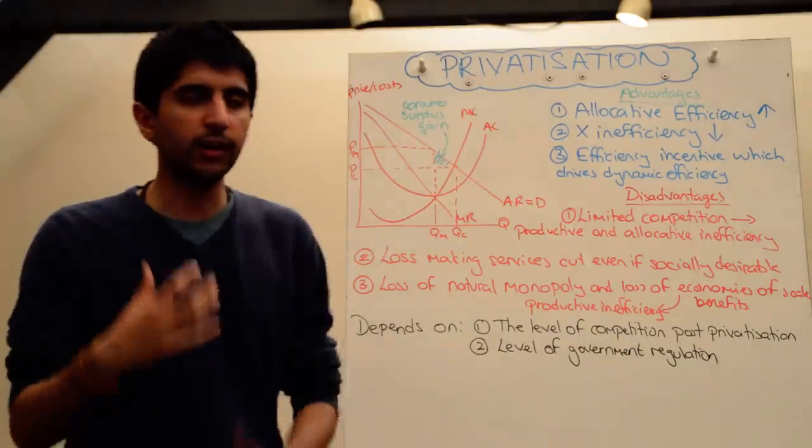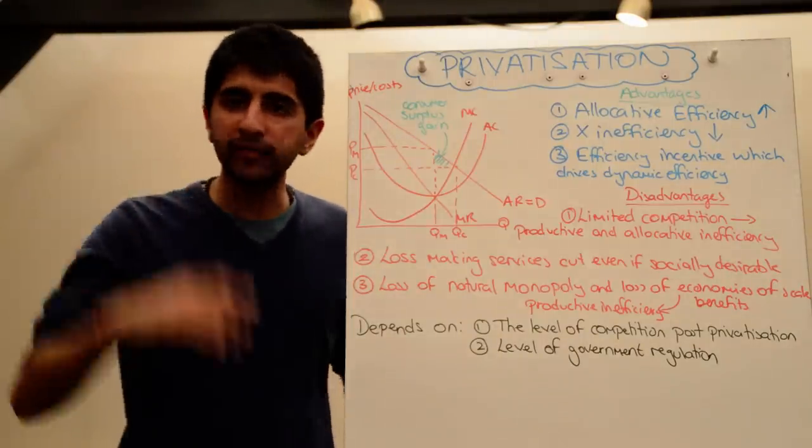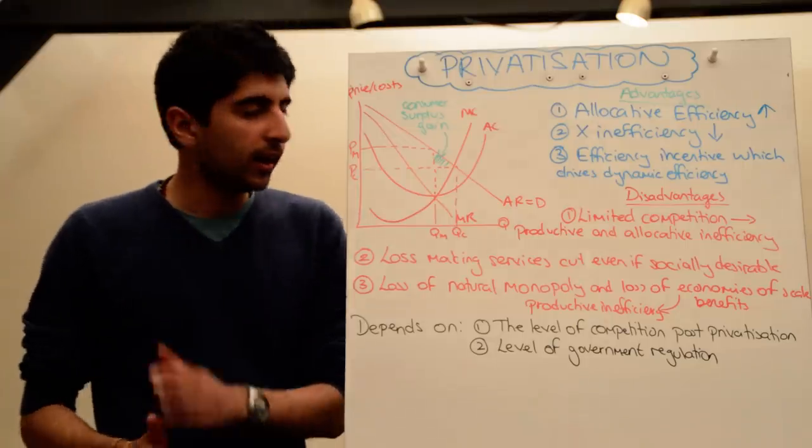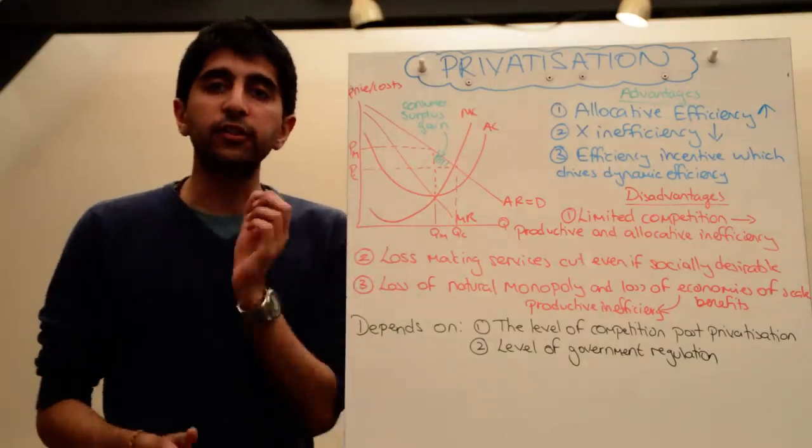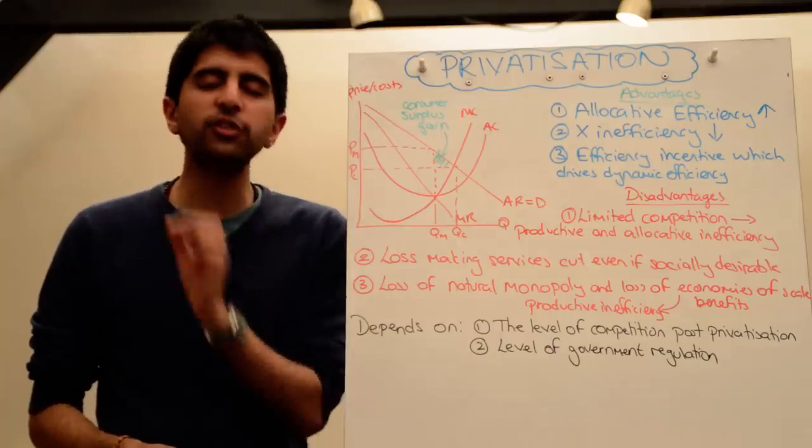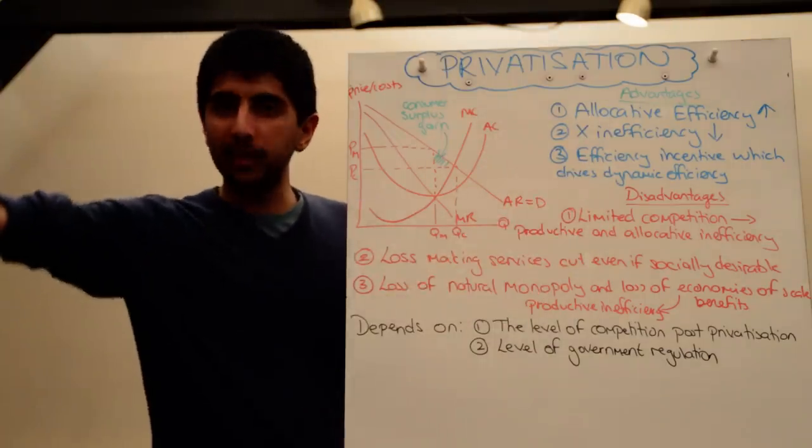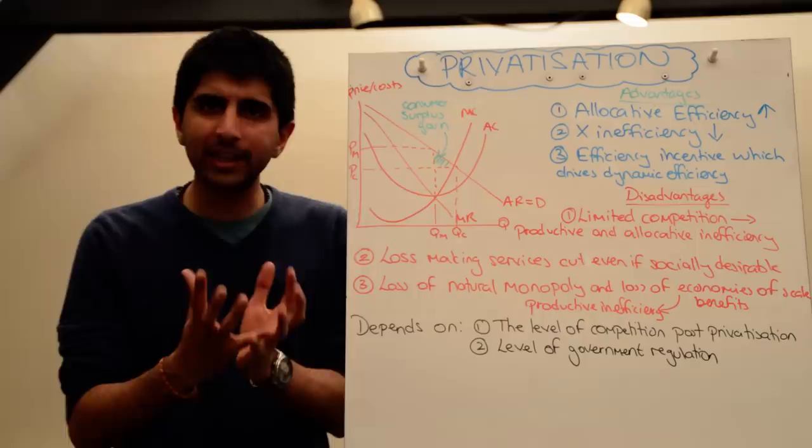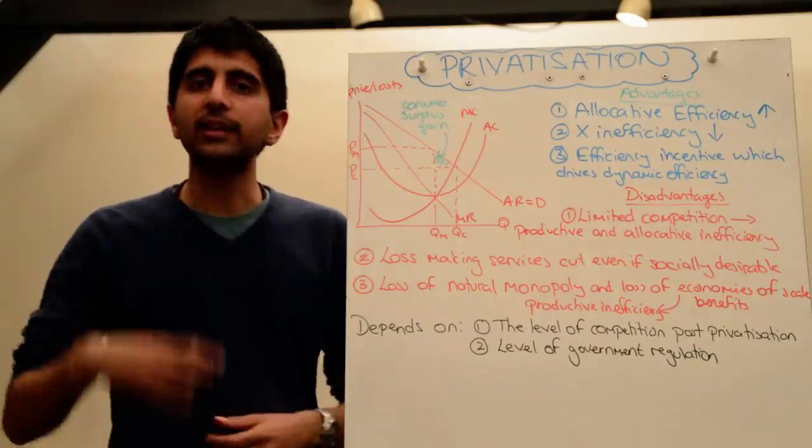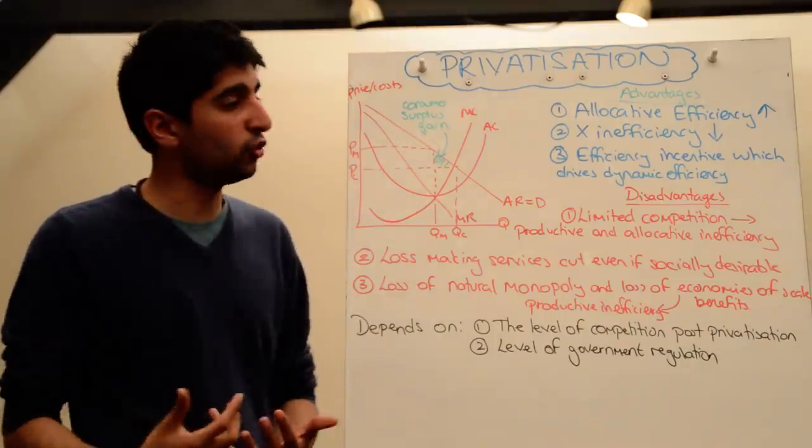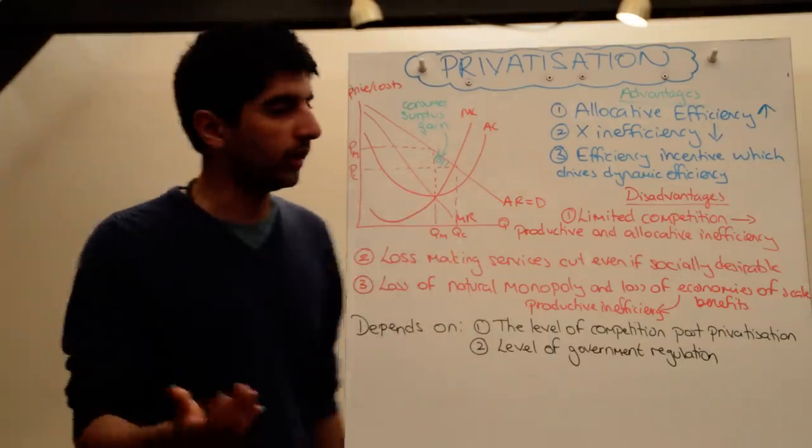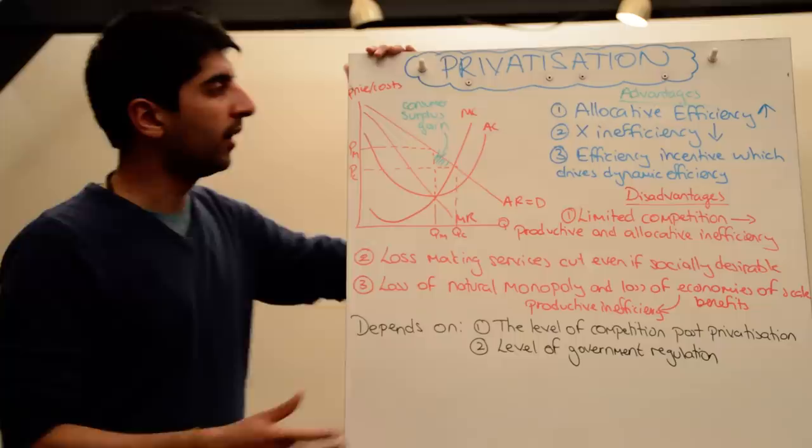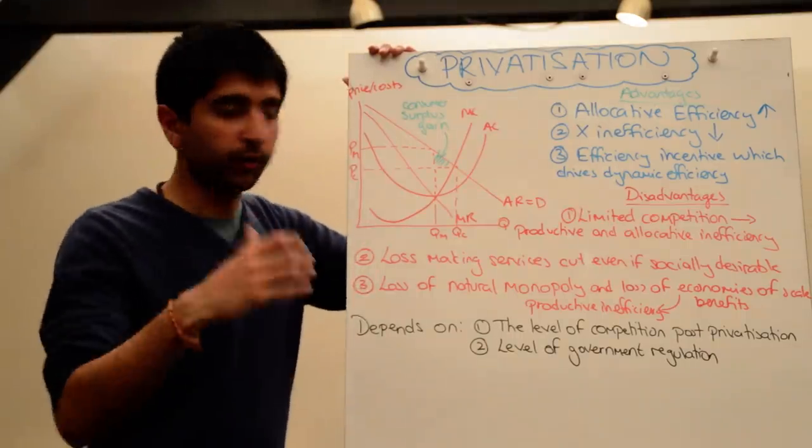There will be a reduction in X inefficiency, a reduction in waste, as firms will need to drive down costs to remain competitive now, to maximise profits. At the same time, people argue that because of privatisation, because of this profit motive, there is going to be a great incentive for firms to be as efficient as possible. In doing so, it might lead to dynamic efficiency gains which occur over time. For firms that operate in highly competitive markets to gain an advantage, they might need to invest over time and be dynamically efficient, which is great again for consumers. It will lead to lower prices over time, hopefully. That's another benefit of a profit motive of increased competition. All of those are major advantages as a result of greater competition and greater striving for efficiency.